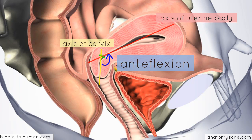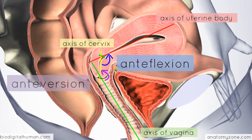The degree of angulation between the axis of the cervix and the axis of the vagina is called anteversion — normally around 90 degrees, though it's not shown as sharply angulated in this model. So to summarize: anteflexion is the axis of the uterine body relative to the cervix, and anteversion is the angle formed by the axis of the cervix relative to the axis of the vagina.